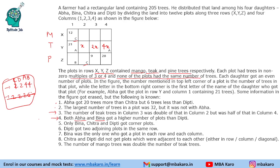We are given spatial constraints: only Bina, Chitra and Deepti got the corner plots. Deepti got 2 adjoining plots in the same row. Bina was the only one who got a plot in each row and each column. Chitra and Deepti did not get plots adjacent to each other — including diagonally. Combining these: Deepti cannot get plots adjacent to Chitra, so by elimination, Deepti gets 2 specific adjoining plots, and we have figured out Deepti's plots.